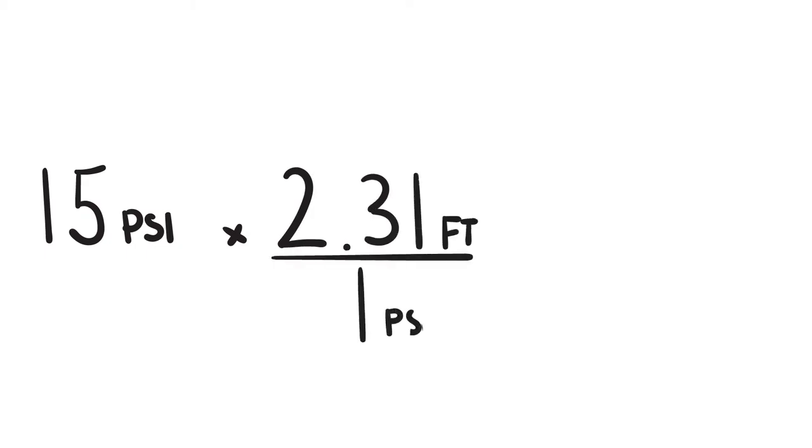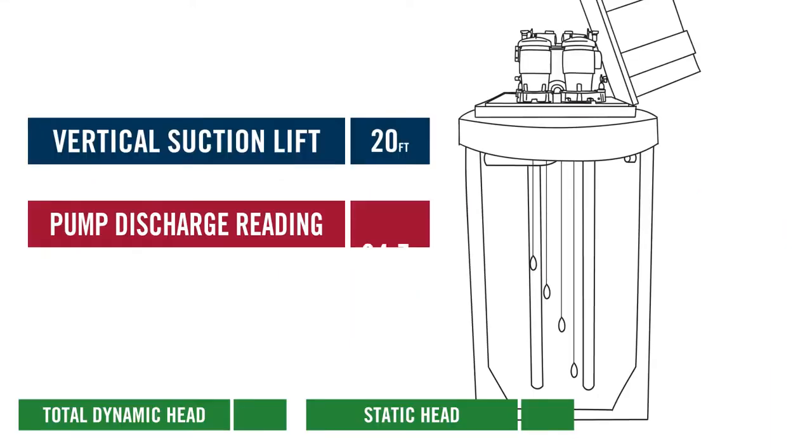Multiply your pump discharge nozzle reading by 2.31. Doing this, convert your measurement to feet of water.